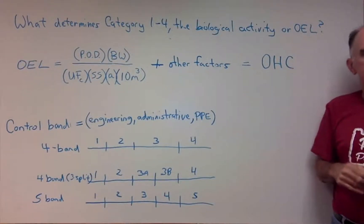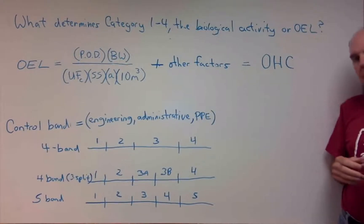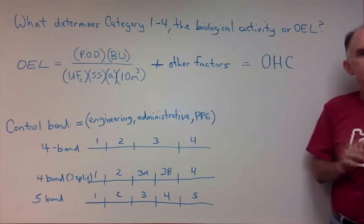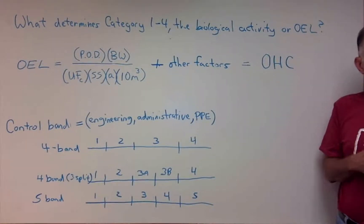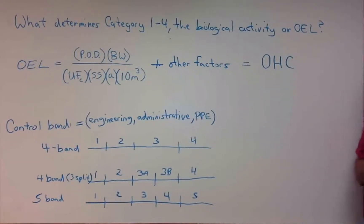Now, that categorization could be 1 through 4, it could be 1 through 5, it could be 1 through 6. It depends on the individual company's system that they're using. And the number of categories really depends on the professional judgment of that company and the system that the company wants to employ.